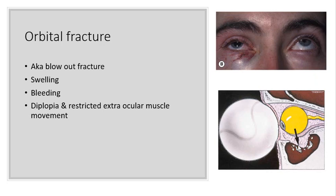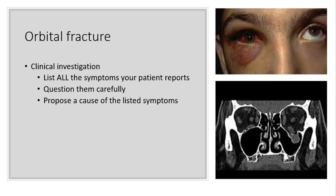Sometimes if the orbital floor has been damaged, the extraocular muscles can fall in and get trapped, causing double vision and restricted muscle movement. From an orthoptic point of view, you need to list all the symptoms your patient reports and question them very carefully about what occurred, and also propose a cause for the listed symptoms — the patient is going to require further investigation of eye muscle movement if you're suspecting an orbital fracture. Here's the eye in question — it's quite bruised — and an x-ray is showing that there has been a fracture of the orbital floor.